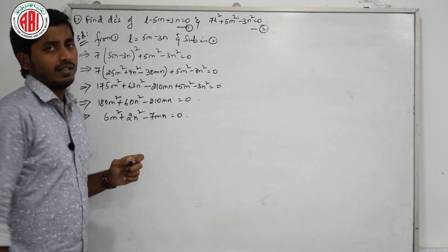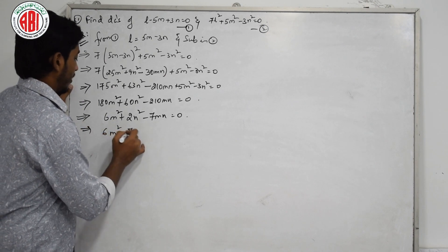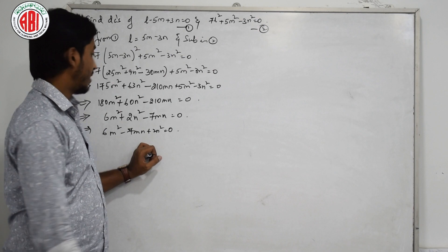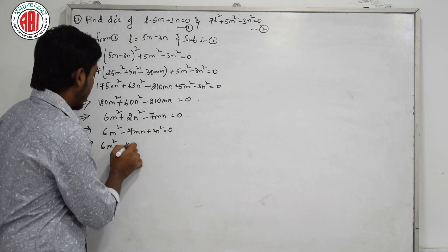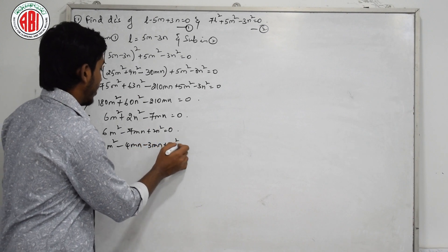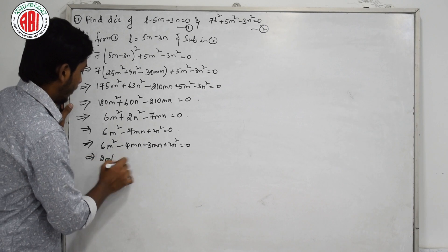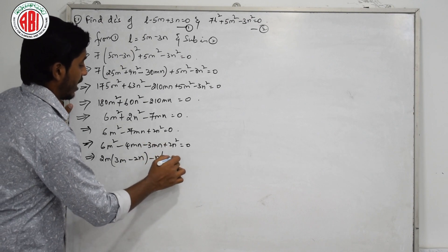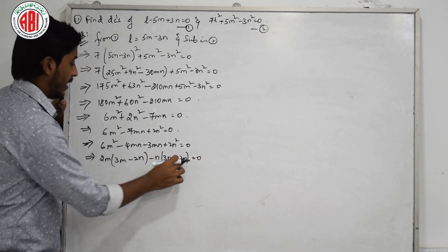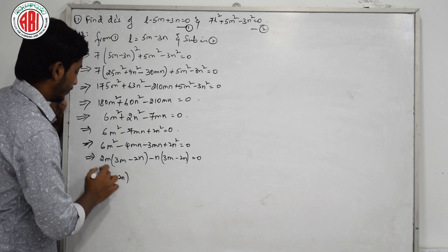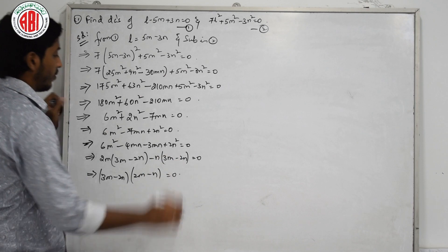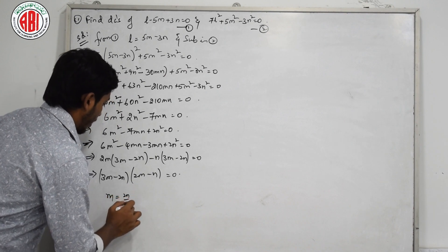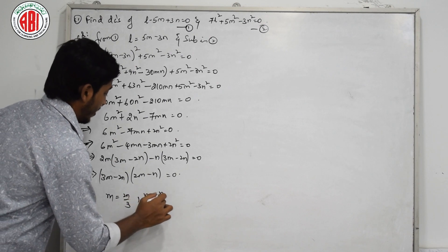We can take 30 as common from 180m², 60n², and 210mn. Dividing through by 30 gives 6m² minus 7mn plus 2n² equals 0. To factorize: 6 times 2 is 12, and 4 times 3 gives the split, so 6m² minus 4mn minus 3mn plus 2n² equals 0. Taking 2m common: 2m(3m minus 2n) minus n(3m minus 2n) equals 0. So (3m minus 2n)(2m minus n) equals 0. Either m equals 2n by 3, or m equals n by 2.